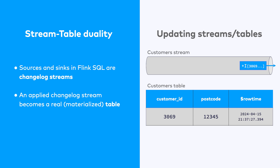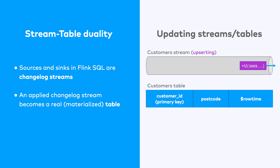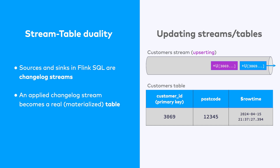By contrast, the records in this customers table will be changing over time. For example, this customer has recently moved and is about to update their postcode. There are two different ways that streams with updates can be handled by Flink SQL. One of these is with a retracting stream. Retracting streams represent updates as a pair of events in the changelog stream, shown here as "-u" followed by "+u". The "-u" retracts the old record, and the "+u" inserts an updated record to take its place. There's another type of updating stream, which is an upserting stream. Upserting streams always have a primary key, used to uniquely identify the row being updated. If the table doesn't already have a row for that key, then an upsert acts as an insert; otherwise, an upsert modifies the existing row in place.